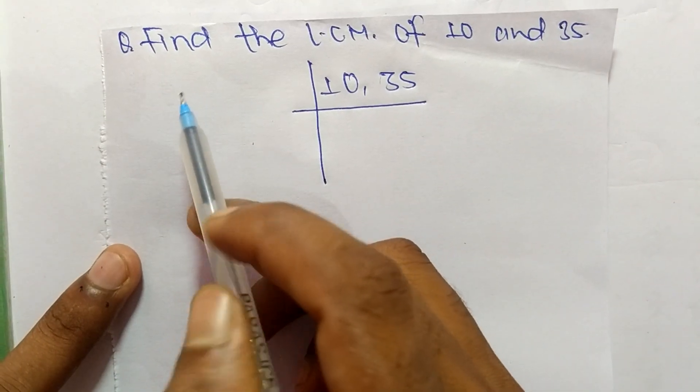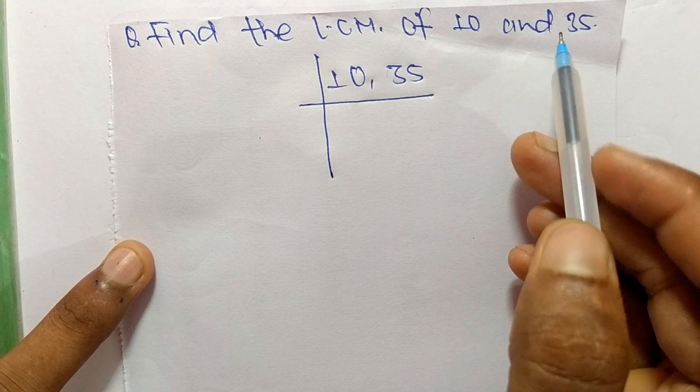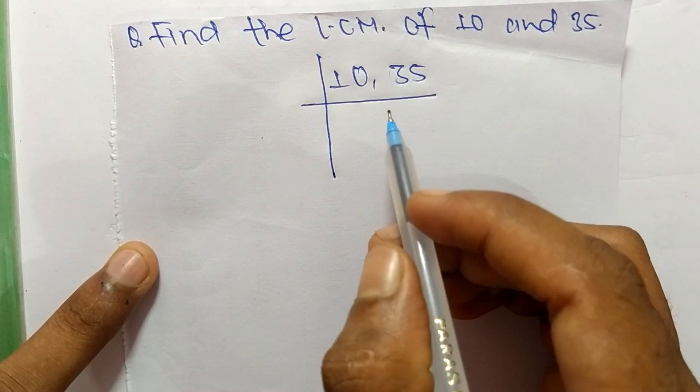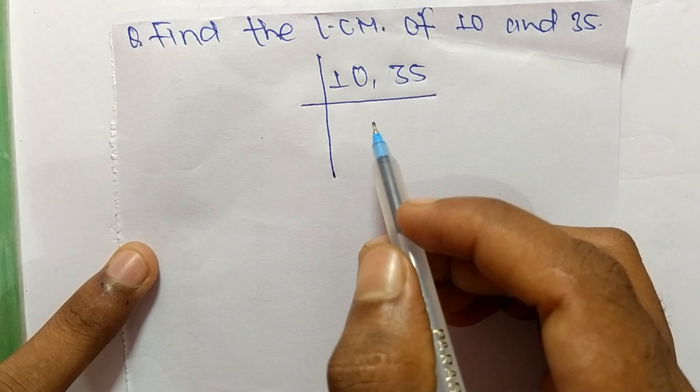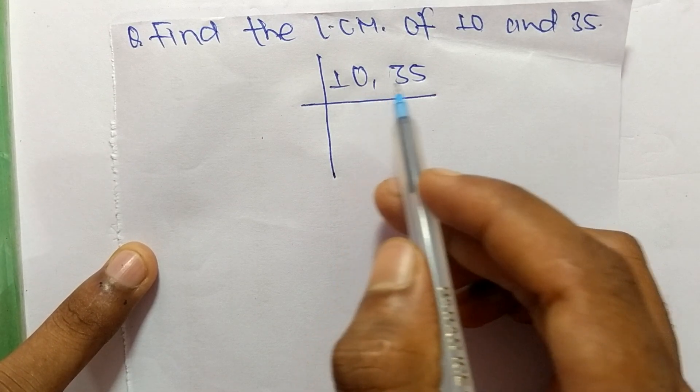So in this video we shall learn to find the LCM of 10 and 35. To find LCM, first of all we have to choose the lowest number which can exactly divide 10 and 35.